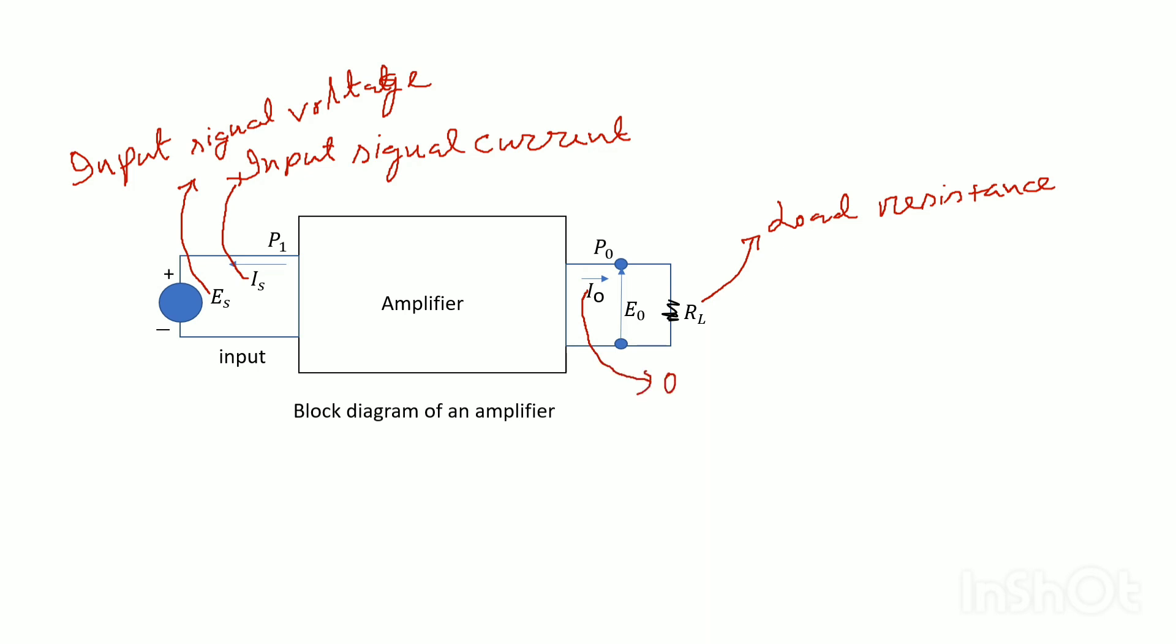Another method of classification is based on amplitude of signals. For small signals, in the order typically of microvolts and millivolts, the amplifier may be classified as small signal amplifier. For larger signals, as a large signal amplifier. Simple algebra is all that is required for calculating the performance of small signal amplifier.